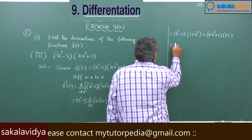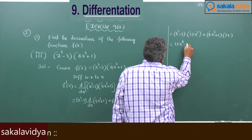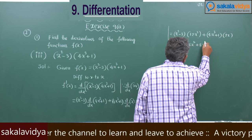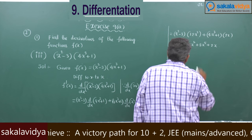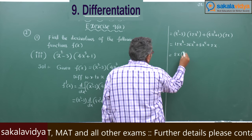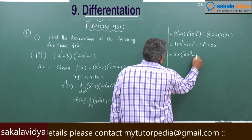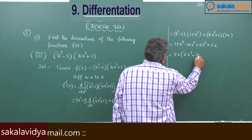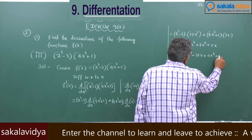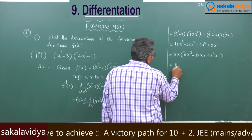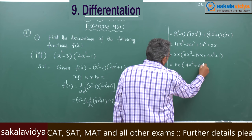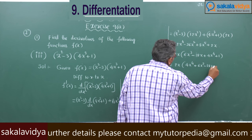This gives 12x⁴ minus 36x² plus 8x⁵ plus 2x. Taking 2x common, we get 2x into (4x⁴ plus 6x³ minus 18x plus 1).